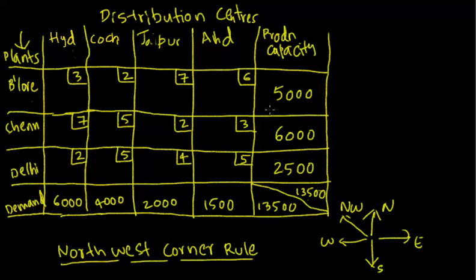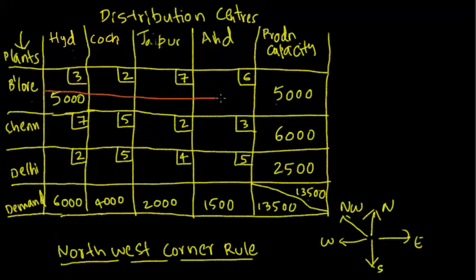Bangalore has a capacity of 5000 units while Hyderabad requires 6000 units. So Bangalore can supply the entire 5000 units. Once Bangalore supplies all 5000 units, the Bangalore plant has exhausted its capacity, so I will cancel this row.